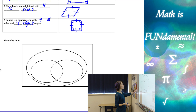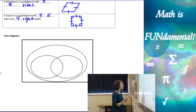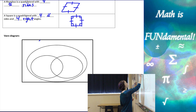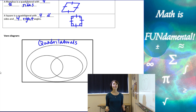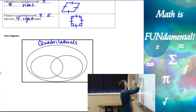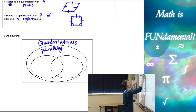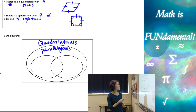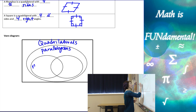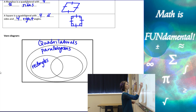Let's look at a Venn diagram. We have quadrilaterals — all four-sided figures. Inside quadrilaterals we have parallelograms, so all parallelograms are quadrilaterals but not all quadrilaterals are parallelograms. Within parallelograms we have rectangles — all rectangles are parallelograms.